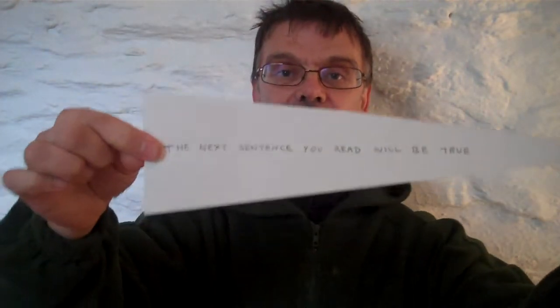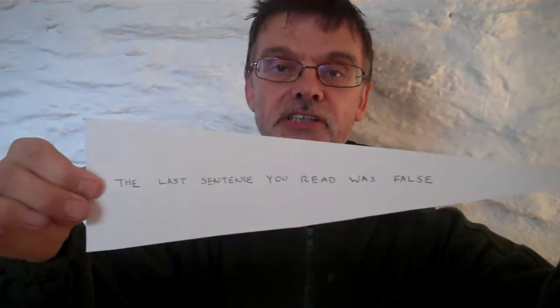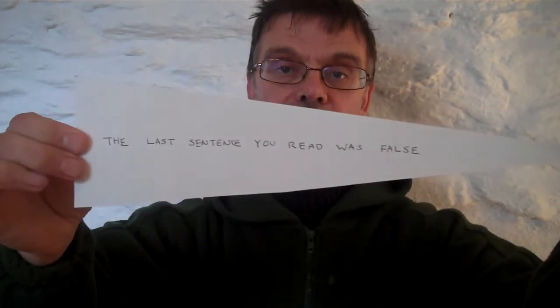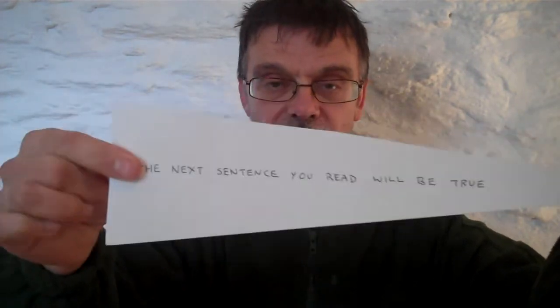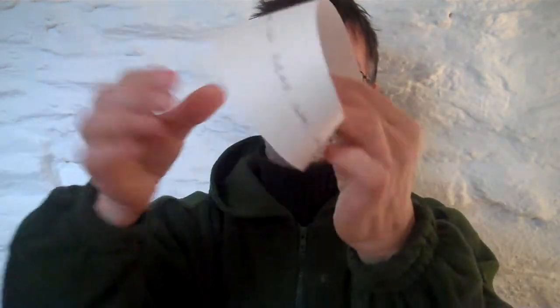So how do you resolve that one? I've been thinking, and the nearest I've got is this. Same sentences, slightly different shaped piece of paper. 'The next sentence you read will be true.' And on the other side: 'The last sentence you read was false.' I'm going to Mobius strip this one again — so it's still a Mobius strip, a single continuous surface containing those two sentences.